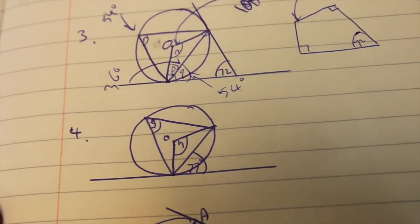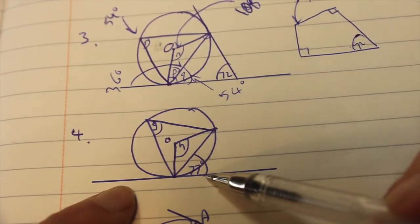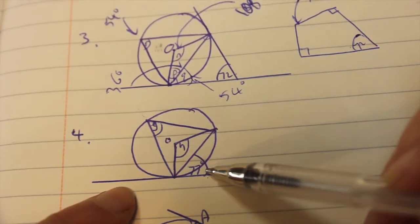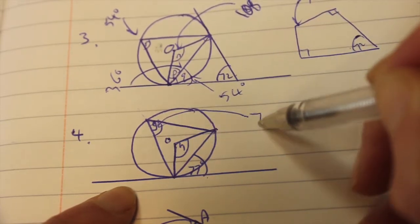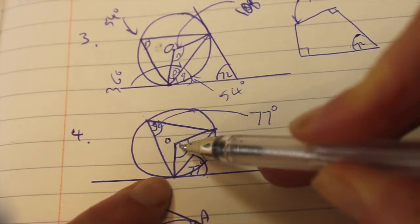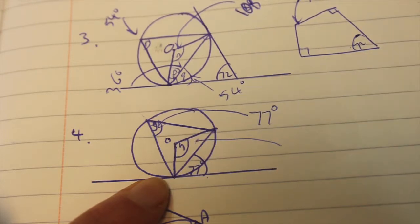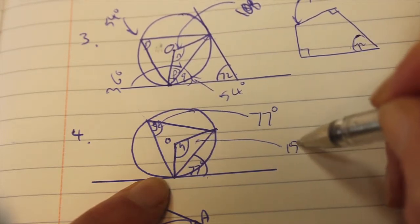Now the next shape. When I see an outside angle. I'm thinking alternate segment theorem. So I'm looking for my triangle. That's 77. That top angle in there is also going to be 77. And the one at the center is going to be double the one at the end. So 77 times 2 is 154 degrees.